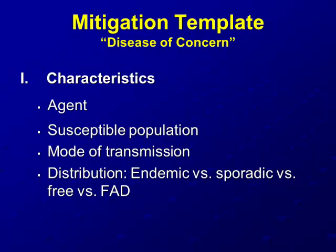A mitigation template for any disease has certain characteristics: being specific to the agent we're dealing with, the diagnosis of whatever disease we're talking about, the prevention, response, the process we go through in dealing with it, communication, how we get information out, business continuity, and the tools that regulatory agencies need. I'm going to aim a lot of the discussion on the characteristics of EHV-1 and some of the considerations in applying this template to that.